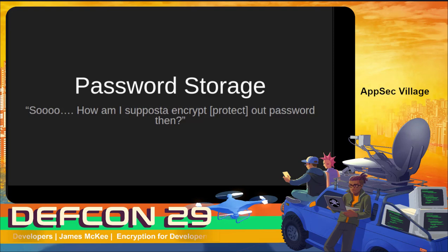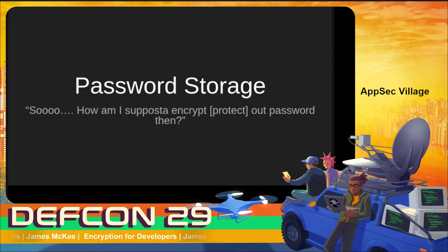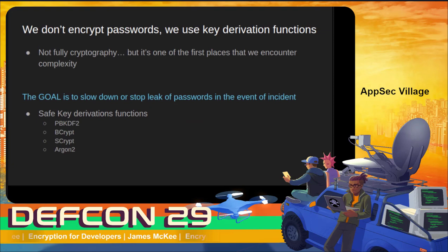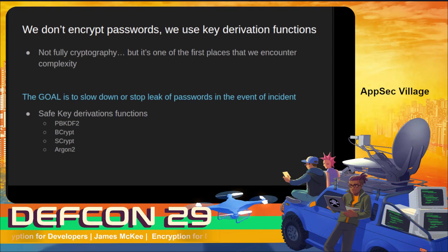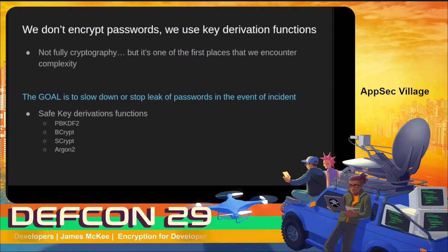Password storage is one of those topics we have to talk about because it's the first real place most people encounter encryption. When I tell a group we go through this process and they ask 'how are we supposed to encrypt our passwords?' — the answer is: you don't. We use key derivation functions. This isn't fully cryptography, but if we don't talk about it up front you can easily lose everything. The goal is to slow down or stop the leak of passwords in the event of an incident — if somebody gets our password database, we want it to take them the maximum amount of time to guess all those passwords.